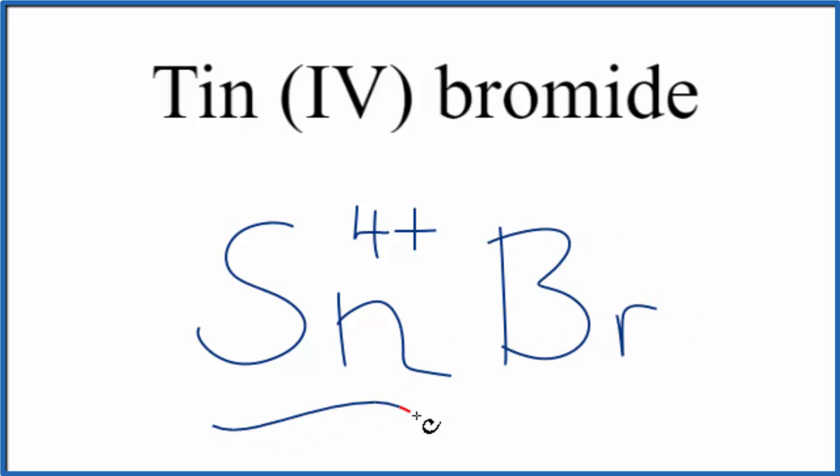Since we have a metal here and a non-metal, this is going to be an ionic compound. We want the charges to add up to 0. So we have the 4+ here. Bromine, that's in group 17, sometimes called 7A on the periodic table, that's 1-.